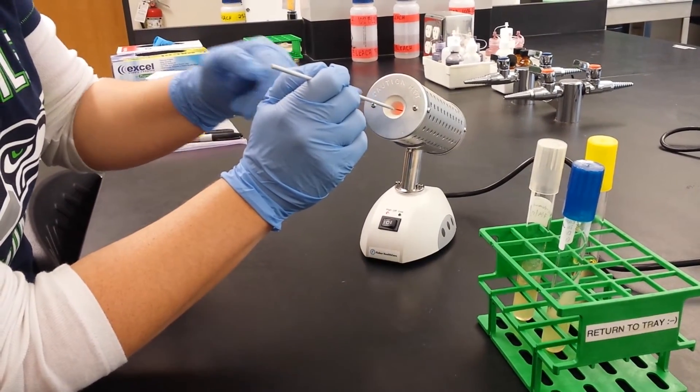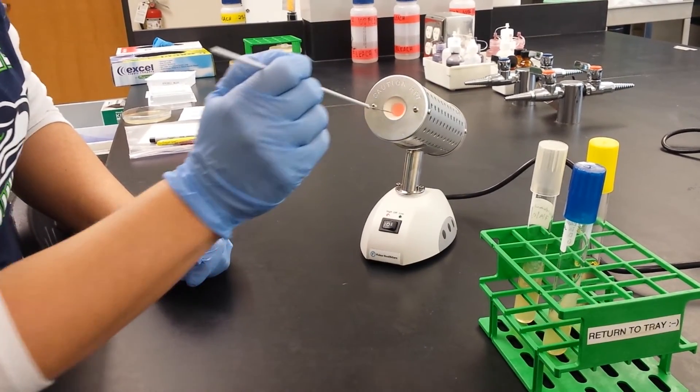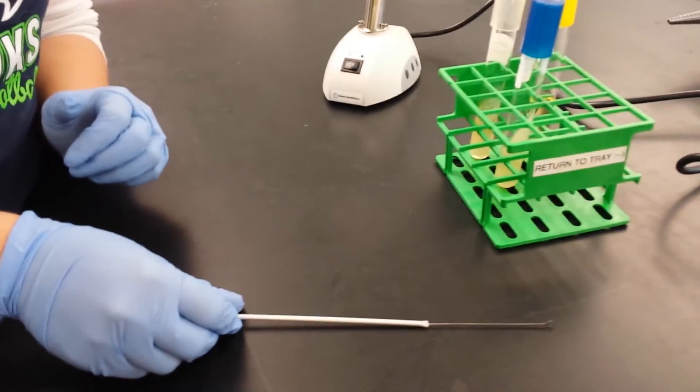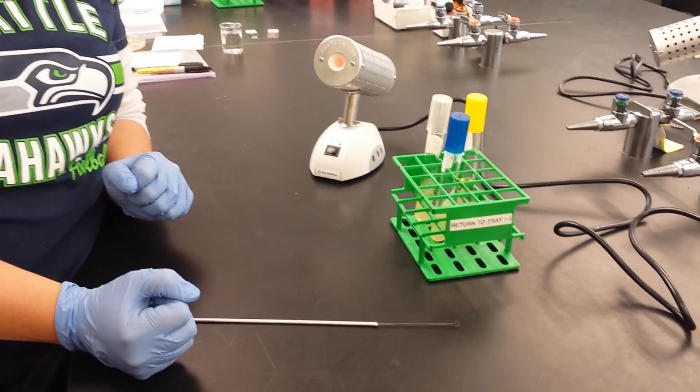Notice that I didn't put the handle of the loop in. If you did that, it would melt. Okay, so then we bring it out. Now it's sterile. We're going to set it on the table when you're done. And we'll see you in the next video.